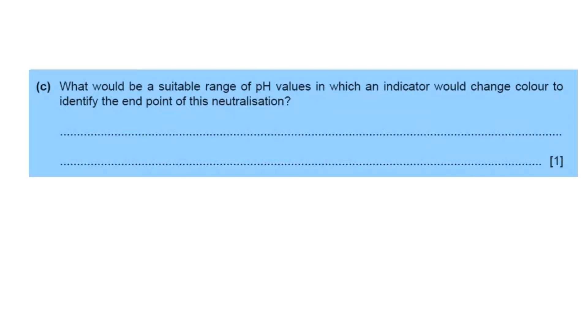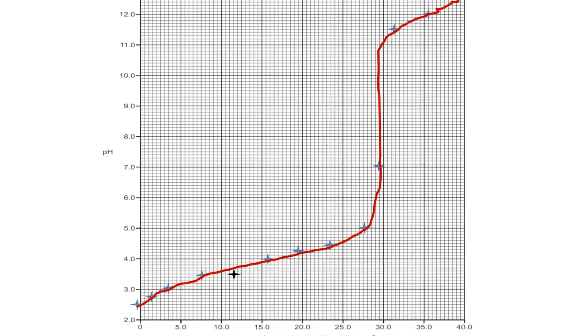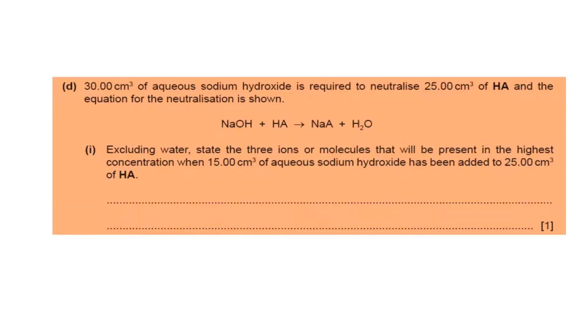Now question C. What would be a suitable range of pH values in which the indicator would change color? 6.5 to 11. This is taken from the graph. If we see the graph, this is the vertical height where volume is constant. So in this region, the indicator color changes.